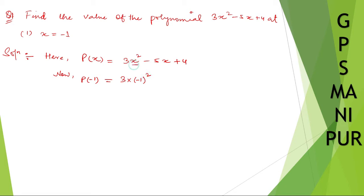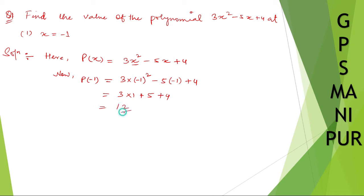So 3 into (−1)² minus 5 into (−1) plus 4. (−1)² is 1, so 3 into 1 is 3, minus minus 5 gives plus 5, plus 4. So 3 plus 5 plus 4 equals 12. The answer is 12.